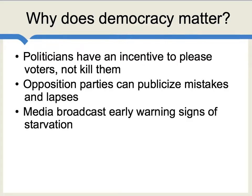Finally, democracy is associated with freedom of the press. Media broadcasts can pick up early warning signs of starvation, make it a national issue, make it an international issue, make sure that if a famine comes it is really understood who is to blame, and also to mobilize international aid and domestic food transfers to help avoid or limit the famine. For all of these reasons, democracy has a beneficial impact on food.